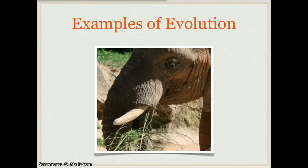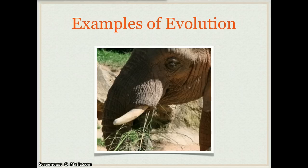Elephants in Africa are also another example of evolution happening today. Poachers kill elephants for their large tusks and the ivory in them. It used to be an advantage for elephants to have long tusks because they use them to fight off other elephants, compete for food, and compete for mates. But now that elephants with large tusks are being killed, the elephants that are left have smaller and smaller tusks, so the elephant population overall has really small tusks.